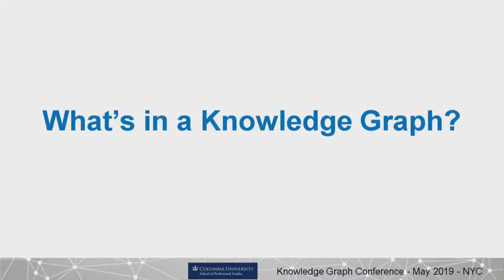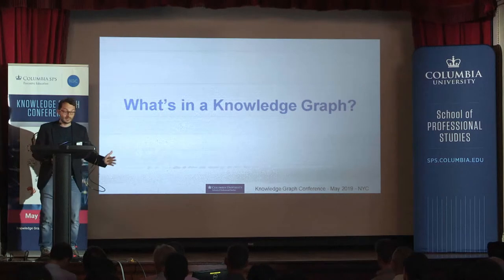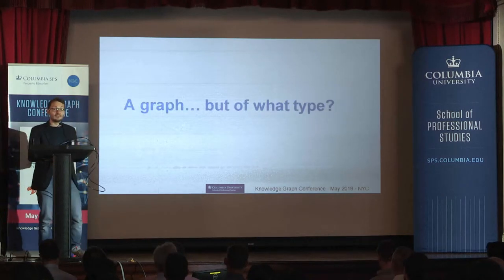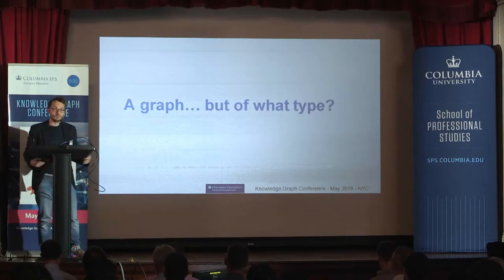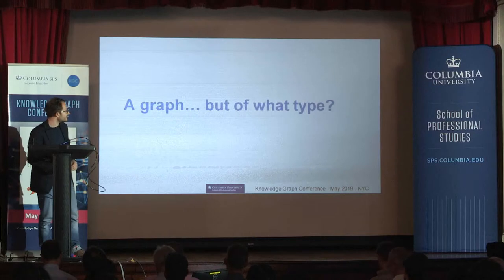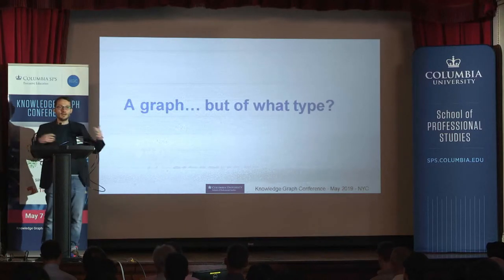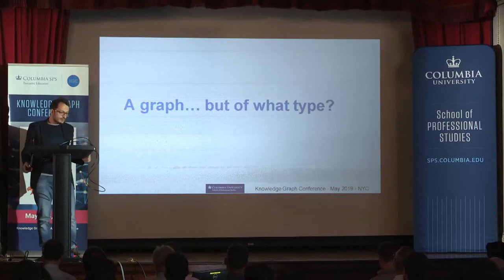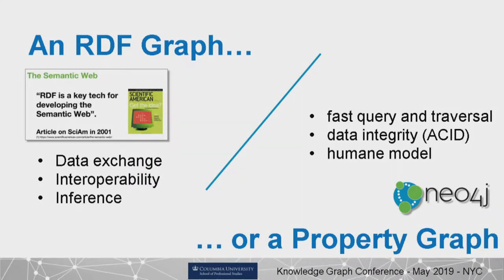What I'd like to talk about today is the two types of graphs. By now we know that there are at least two paradigms to represent data as a graph: the RDF graph and the property graph. Let me give you a little bit of history on where they come from, because that explains how they're different.